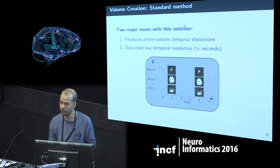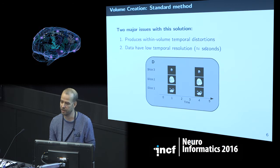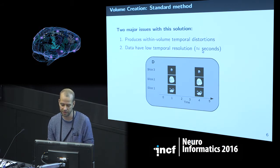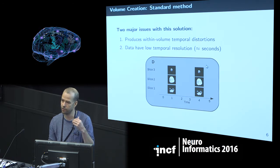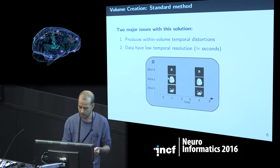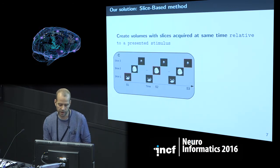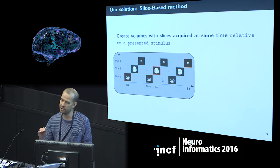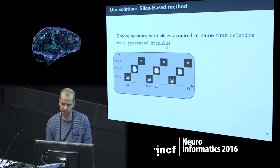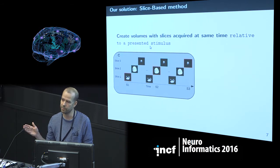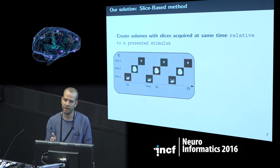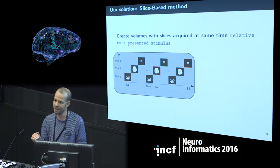This leads to a typical temporal resolution in fMRI on the order of seconds. Typical fMRI experiments with a TR of around two to three seconds and 30 or more slices have a temporal resolution on the order of seconds. What we have come up with is a method to create whole-brain volumes composed of slices that are all acquired at the same point in time relative to a stimulus.